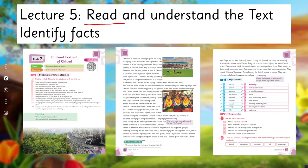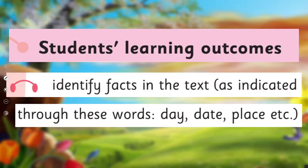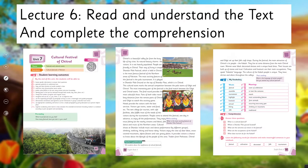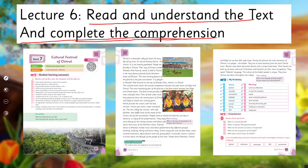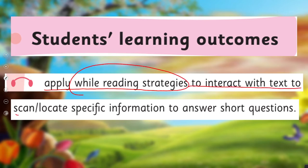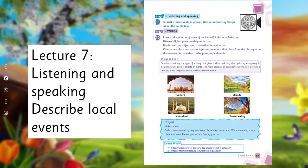Lecture 5, we'll read and understand the text to identify facts, and we'll cover the SLO to identify facts in the text as indicated through words like they, date, place, etc. Lecture 6, we'll complete the reading and comprehension of this unit and cover the SLO to apply while-reading strategies to interact with the text, to scan or locate specific information, and to answer short questions.